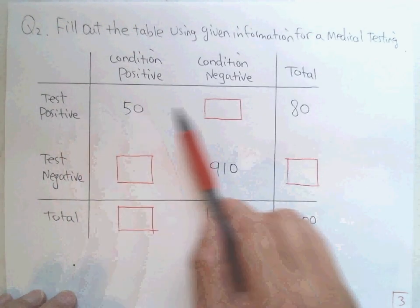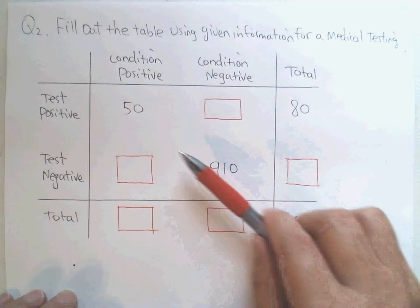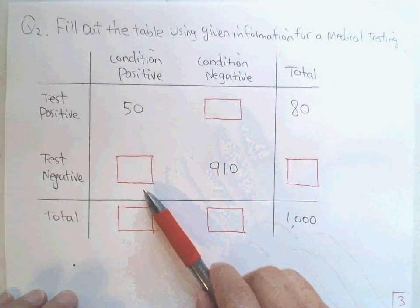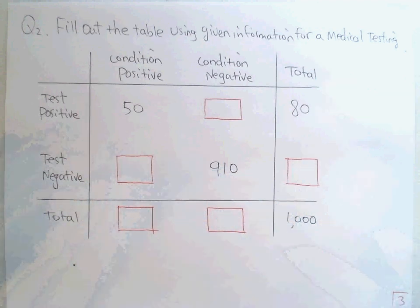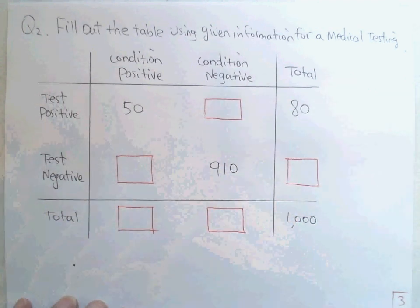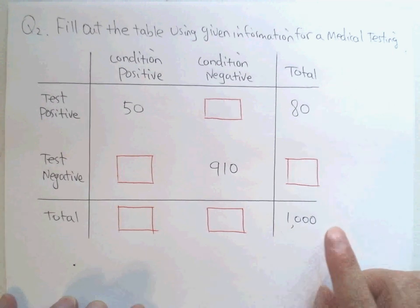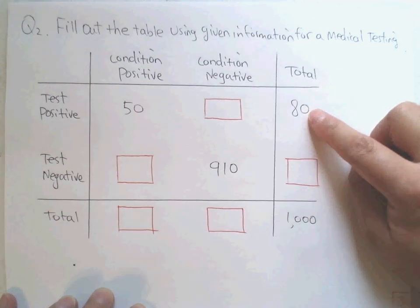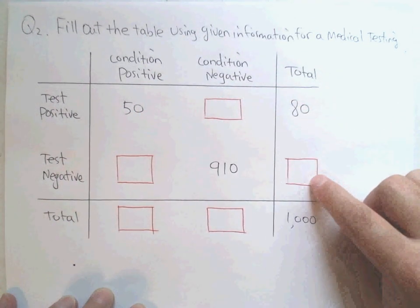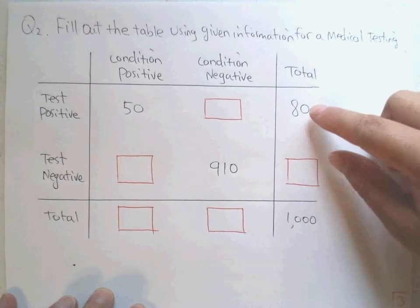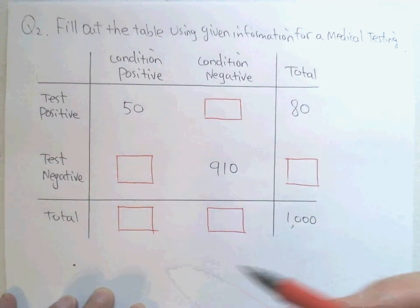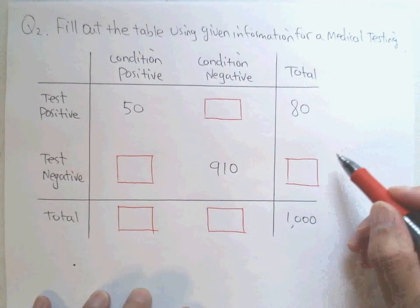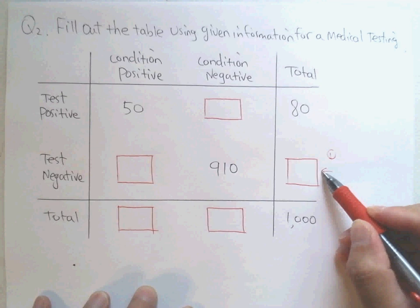Now for the second question: we have a contingency table with some information already given, but some boxes are missing. Can you fill in all the missing values based on your basic knowledge? Let's go through these one by one. First, what is the total for the negative test results row? This 1,000 is 80 plus this missing box, so we can determine this box first.